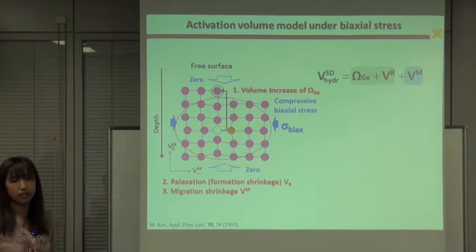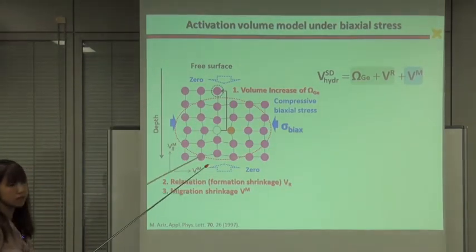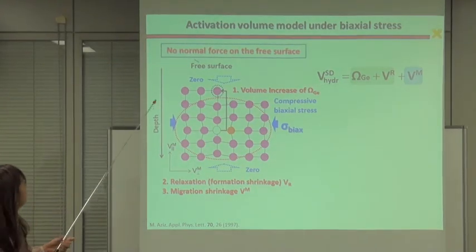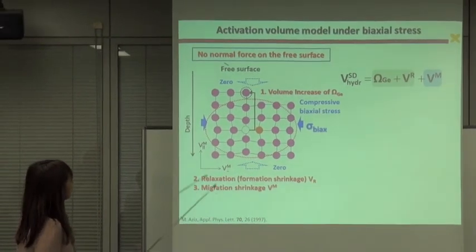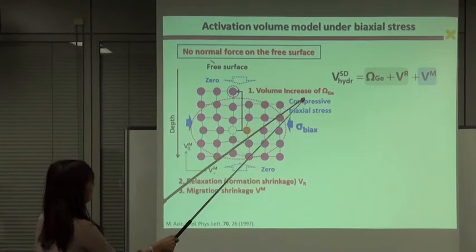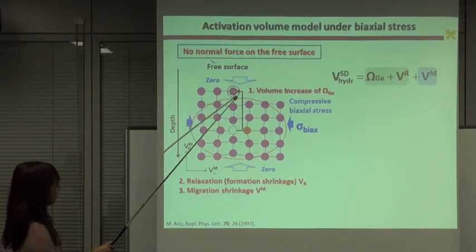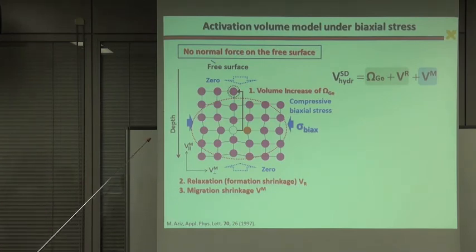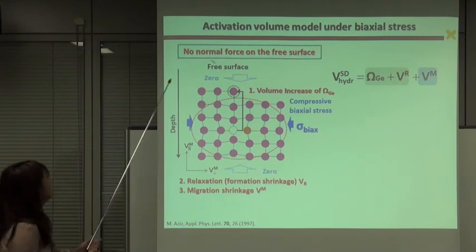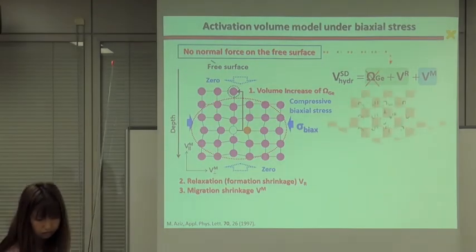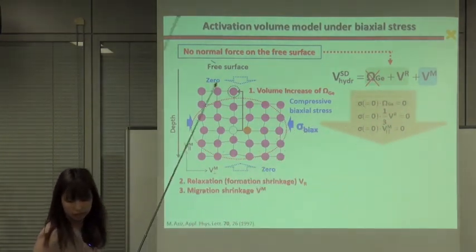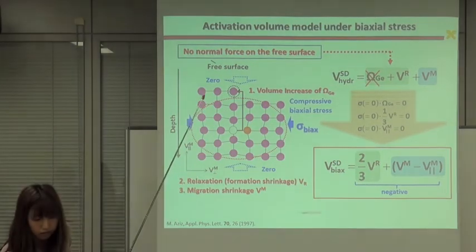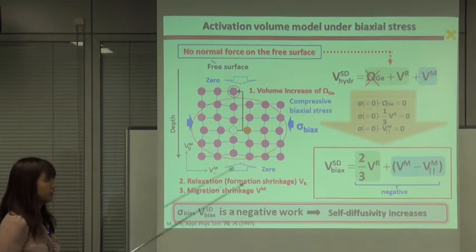So in the case of biaxial stress, in our case, the same processes as hydrostatic stress occur. The only difference is that there is no normal force on the free surface because this is biaxial stress. So this volume increases by one germanium atomic volume at the free surface. And relaxation and migration volume in the direction to the surface or inverse direction to the surface interact with zero stress and do not contribute to the work. As a result, activation volume becomes negative volume. So the work of the lattice against the stress field is a negative work, and then self-diffusivity increases.